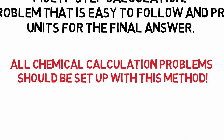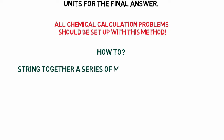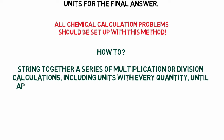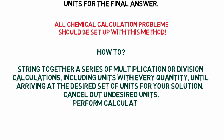To lay out a problem with unit analysis, string together a series of multiplication or division calculations. Include units with every quantity until arriving at the desired set of units for your solution. To make sure your problem is set up correctly, cancel out intermediate units before doing the actual calculation. When you are confident your problem is arranged correctly, calculate your answer.